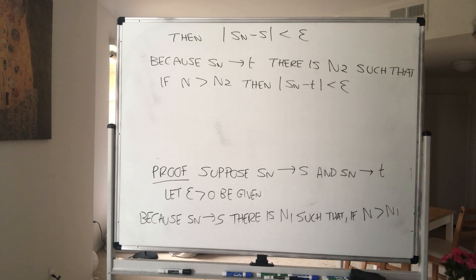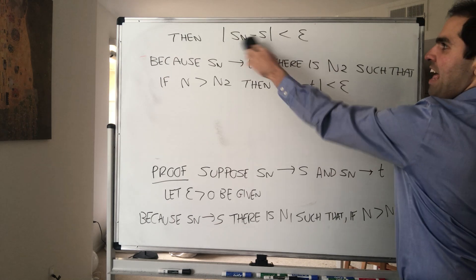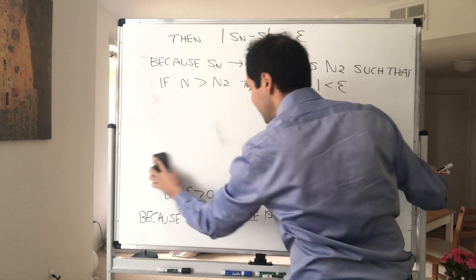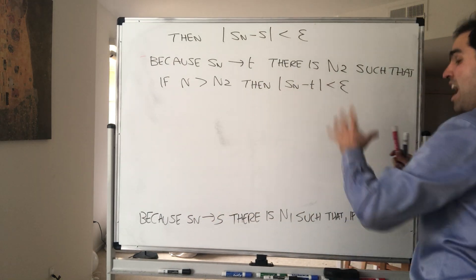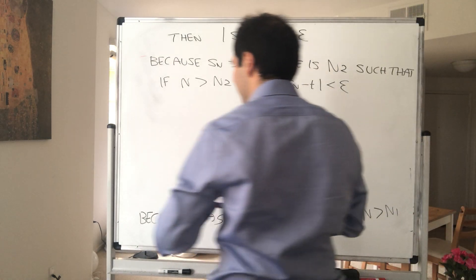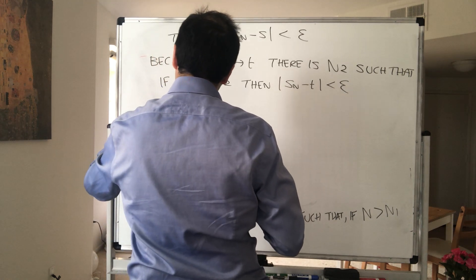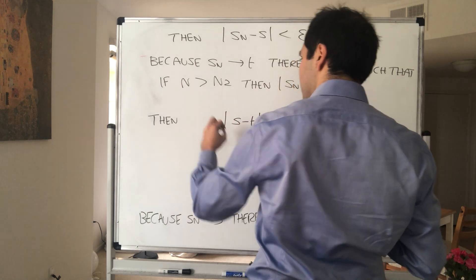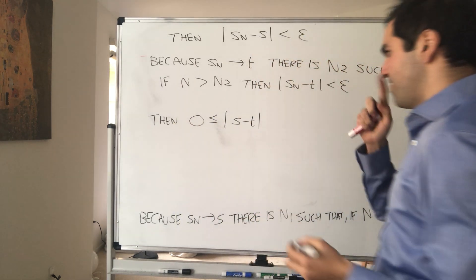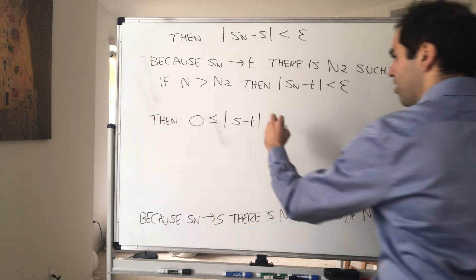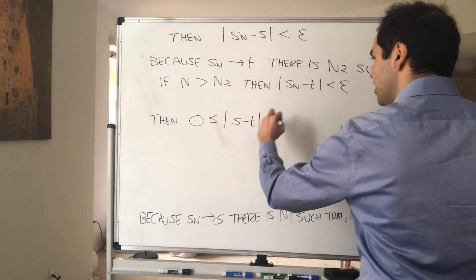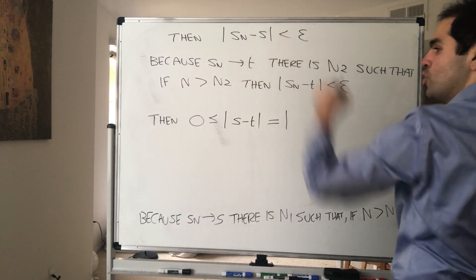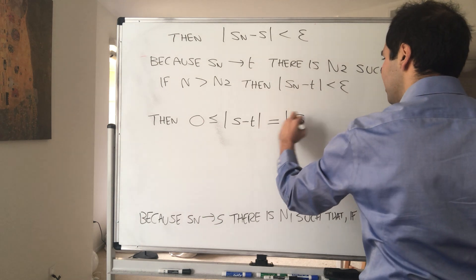And so in other words, what do we have? We have info about Sn versus S, and we have info about Sn versus T. But now let's compare S and T. Then, consider the absolute value of S minus T. On the one hand, because it's an absolute value, it's greater or equal to zero. On the other hand, you want to use this very important trick in analysis of adding and subtracting Sn. So this is the same thing as S minus Sn,